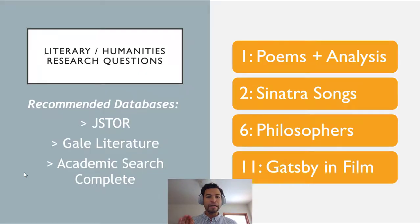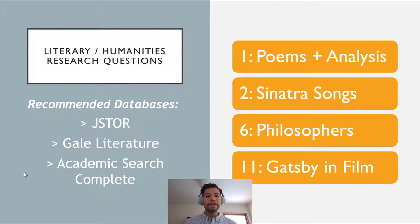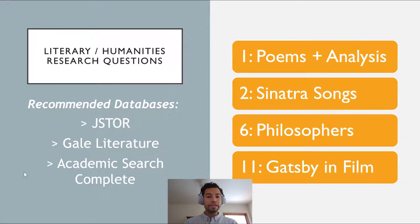Your professor gave you a lot of topic questions, which is great because you have a variety to choose from, but I see two flavors in the questions. Some are very humanities-oriented or based on literary analysis, such as the ones about the poems, the Sinatra songs, the philosophers, or Gatsby in film. For these types of questions, as a librarian I would recommend particular databases. For these humanities-oriented questions I would suggest JSTOR, Gale Literature, and Academic Search Complete.